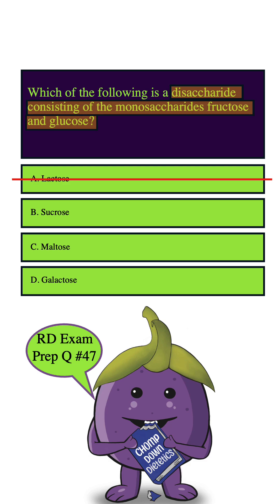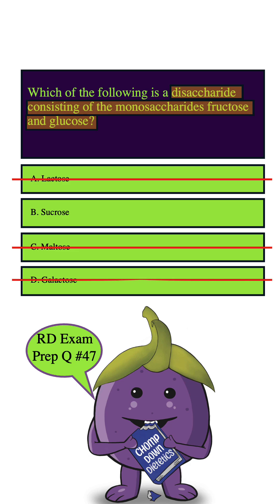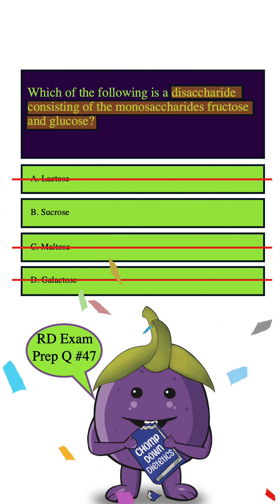Maltose is also a disaccharide, but it's made up of two glucose molecules, so we can safely eliminate this answer choice. How about D? Galactose is actually not a disaccharide — it is a monosaccharide. So we can safely eliminate this answer choice as well, leaving us with B, and that is indeed the correct answer.